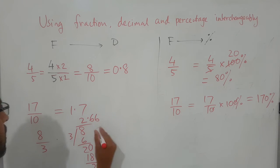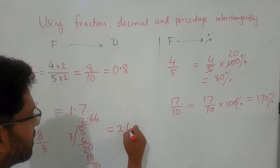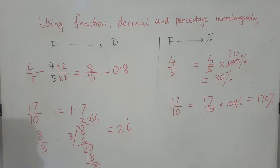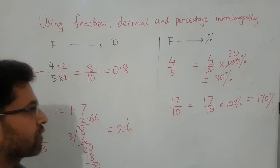So it means, if you write down this, it is 2.6 recurring, because 6 is repeating. So 8 over 3 is basically 2.6 recurring.